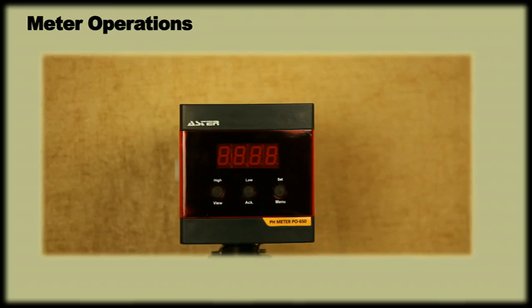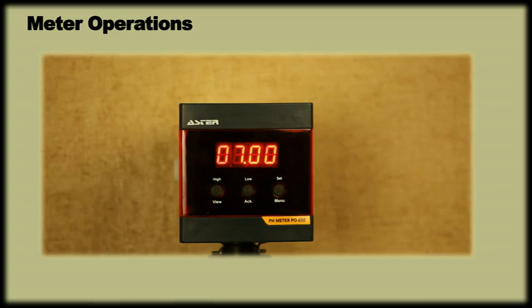Meter Operation: Let us now learn the operation of the meter. By turning the meter on, the display will show the company name, type, version and output. As you can see, it has three programming keys, view key, acknowledge key and menu key.